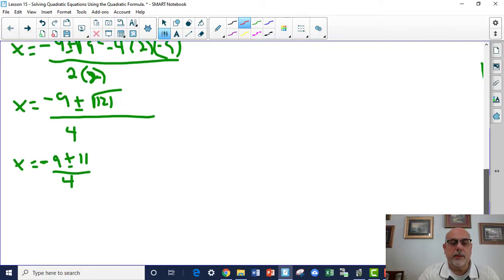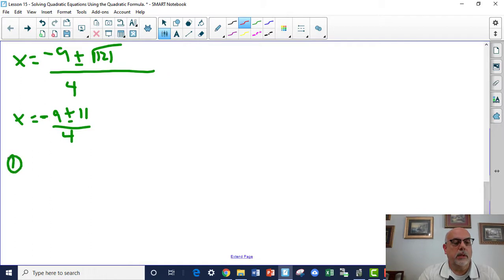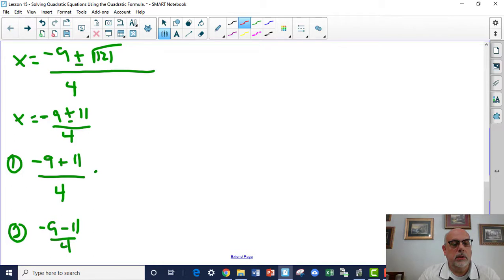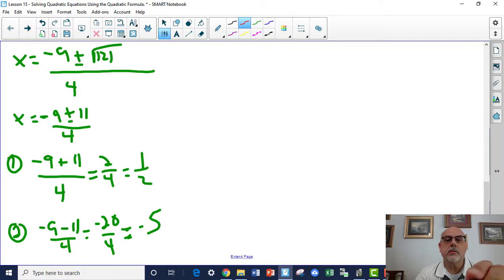So you've got two cases to examine here. Case number one, negative 9 plus 11 over 4. In case two, negative 9 minus 11 over 4. So negative 9 plus 11 is 2, 2 over 4 is a half. Negative 9 minus 11 is negative 20 over 4, which is negative 5. So this quadratic equation has got two answers: one half and x equals negative 5.